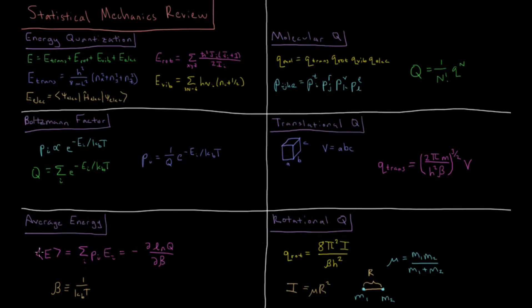The average energy for a given molecule is determined by the sum over all states of the probability of being in that state times the energy of that state — a weighted average of the energies of all states. This is also equal to the negative partial derivative of the natural log of the partition function with respect to beta, the inverse temperature, which is one over Boltzmann constant times temperature.